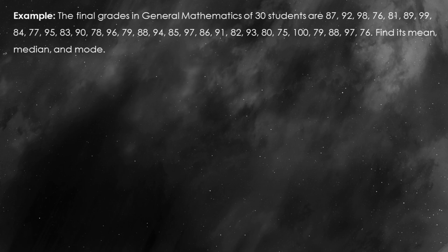Now let's dive into a more detailed example where we're going to calculate all three measures of central tendency — mean, median, and mode — using the final grades of 30 students in general mathematics. These grades are 87, 92, 98, 76, 81, 89, 99, 84, 77, 95, 85, 83, 90, 78, 96, 79, 88, 94, 85, 97, 86, 91, 82, 93, 80, 75, 100, 79, 88, 97, and 76. We'll arrange the grades in ascending order and then calculate the mean, median, and mode.